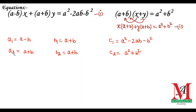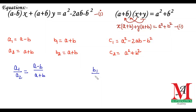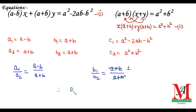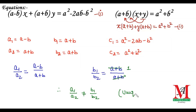Now we need to check the consistency of this system of equations. We find the ratio a1/a2, which is (a − b)/(a + b). Then we find b1/b2, which is (a + b)/(a + b), and these cancel to give 1. We see that a1/a2 is not equal to b1/b2, which means this is the condition for a unique solution.